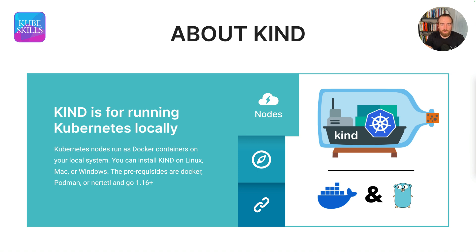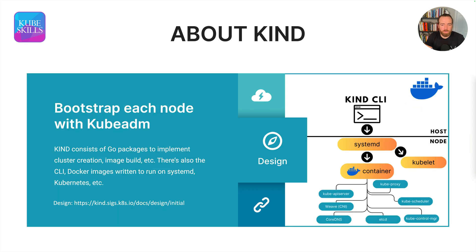Optionally, Go 1.16 is required for running the Kind CLI, which Kind has its own CLI to spin up clusters — but that is optional. You can install Kind on Linux, Mac, or Windows, and it's very easy to get started with and very approachable.